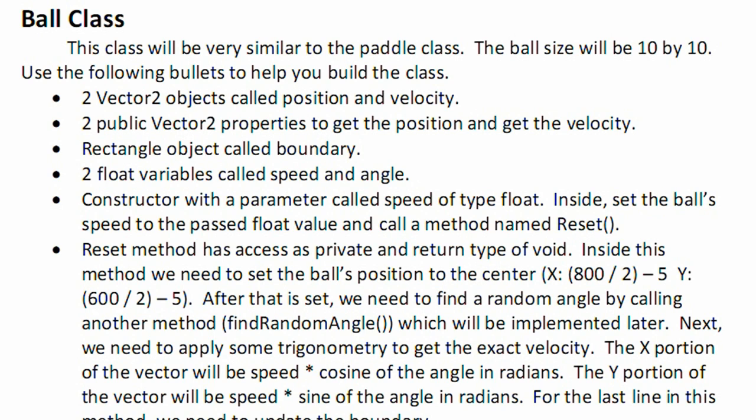To find the y portion of the vector, you take speed times sine of the angle. Again, angle needs to be in radians. And for the last line in the method, we need to update the boundary.